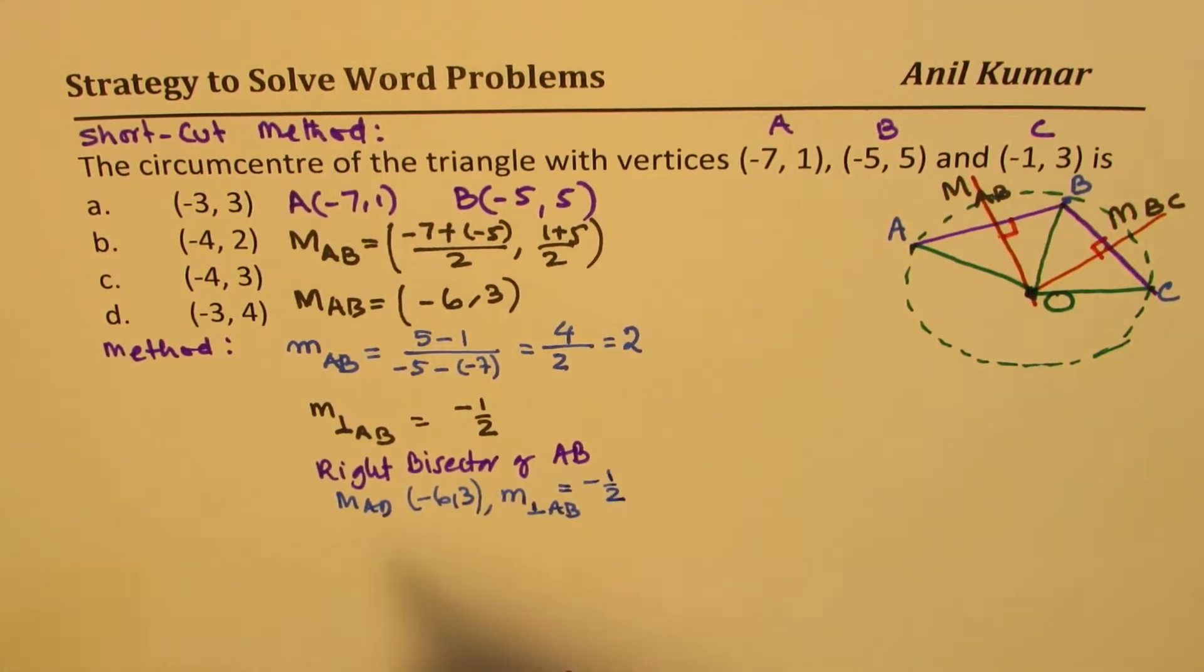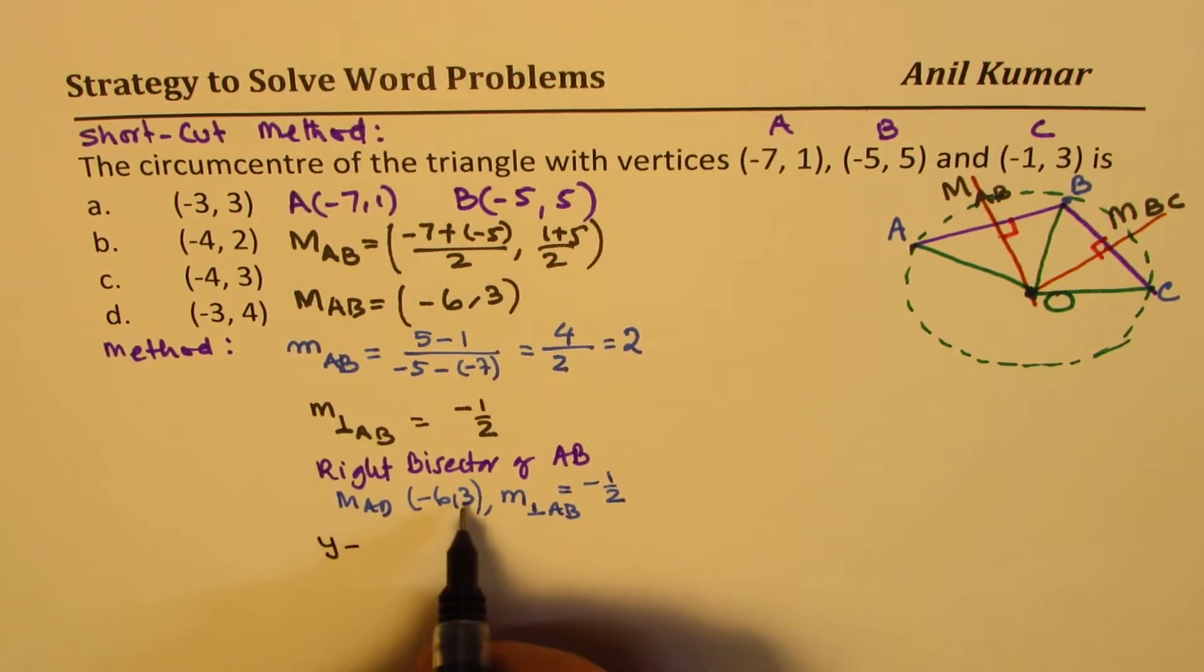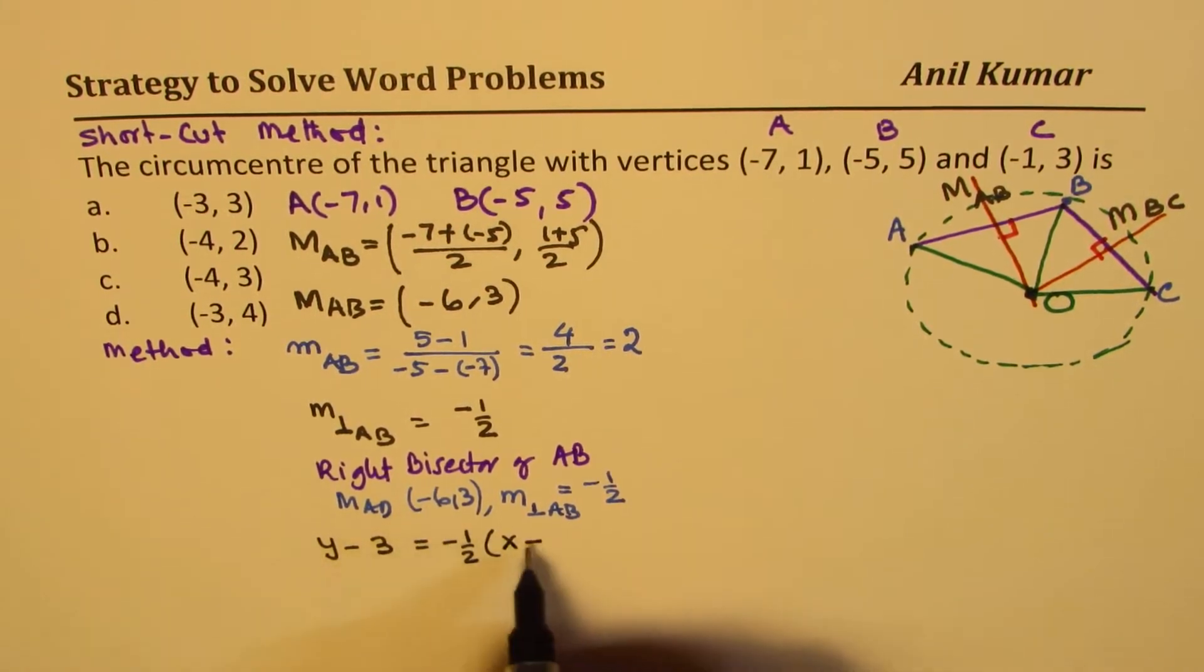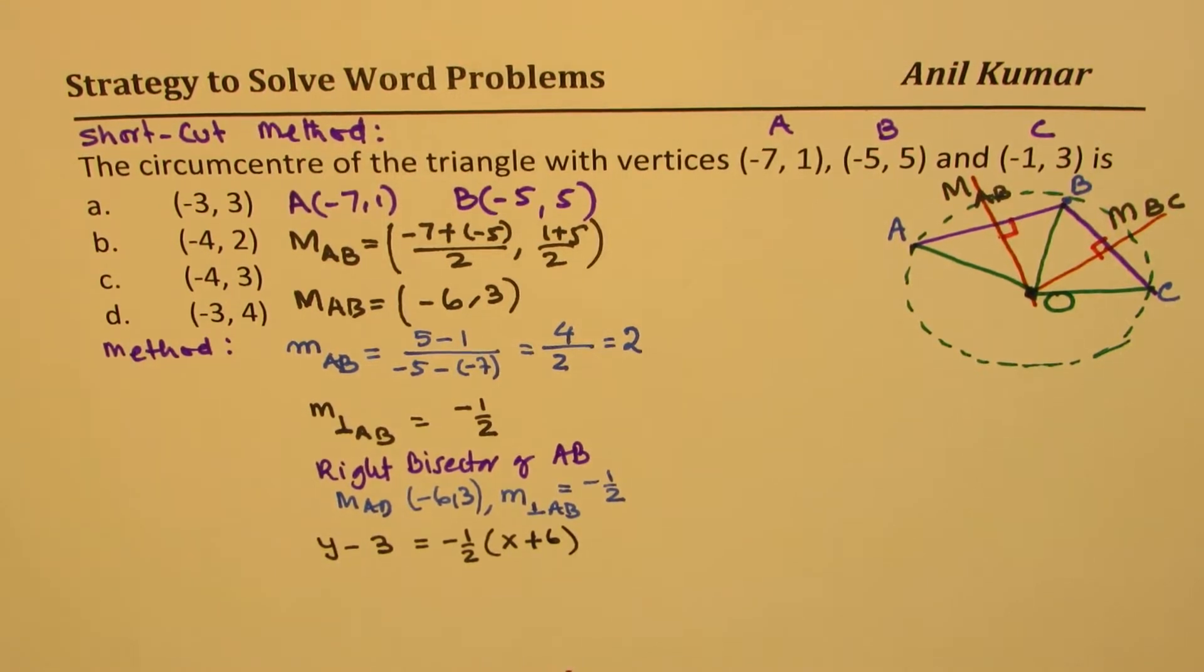You could write this as y minus y value, which is 3 here, equals to -1/2 the slope times x minus x value, which is -6. So it becomes plus 6.